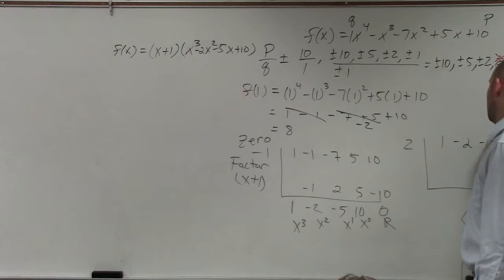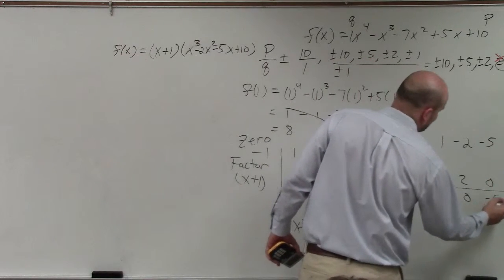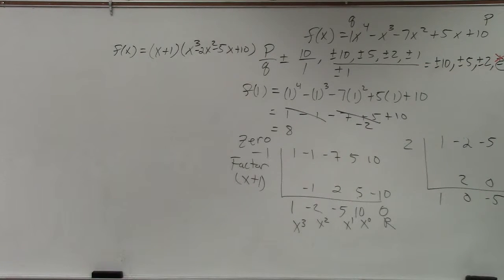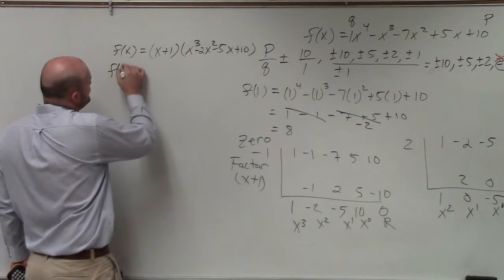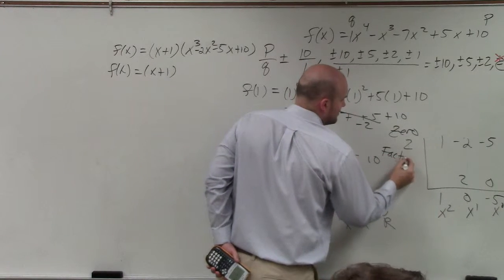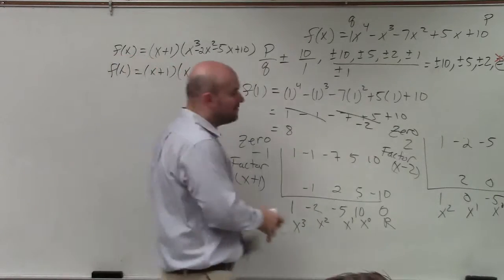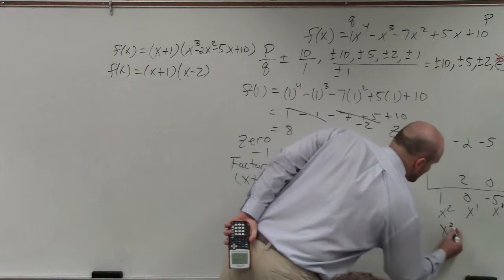1, negative 2, negative 5, 10. Bring down the 1. 1 times 2 is 2. Negative 2 plus 2 is 0. 0 times 2 is 0. Negative 5 plus 0 is negative 5. Negative 5 times 2 is negative 10, 0. Does everybody follow me? Just doing synthetic division. You bring down the first number, multiply diagonal, put the sum here, add vertical sum. So this is going to be your remainder, your constant, your linear, and your quadratic. So basically what I did now is I took my function and I broke apart this. If this is the zero, then my factor is x minus 2, and then when I divided x minus 2 into that factor, what did I get left? x squared minus 5.